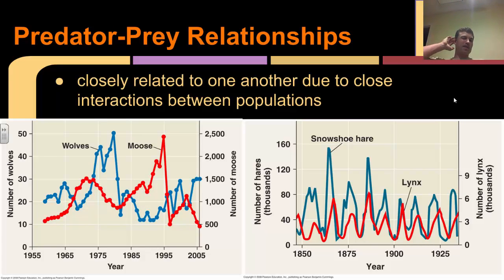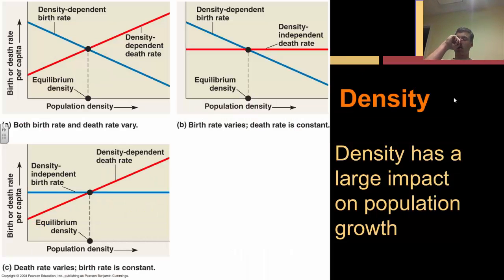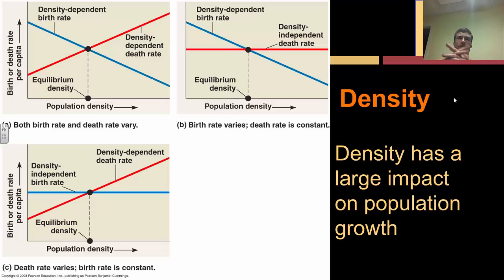Predator-prey relationships we'll get more into when we talk about community interactions, but they have a large impact on population sizes because the two populations are so closely related. The predator is completely dependent upon the prey - if the prey population crashes, the predator population is going to crash too because it won't have any food to survive. Density also has a large impact on population growth. There is an ideal density at which a species is able to maximize its life expectancy as well as being able to replace its members as they die of old age or disease.